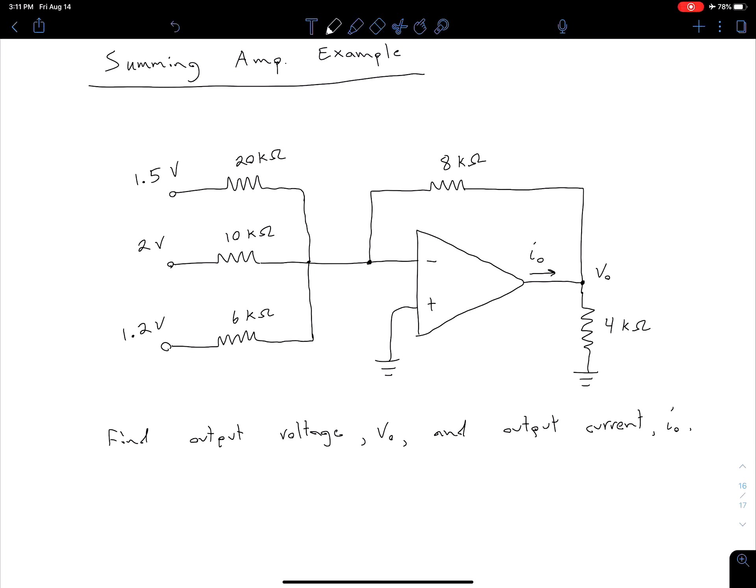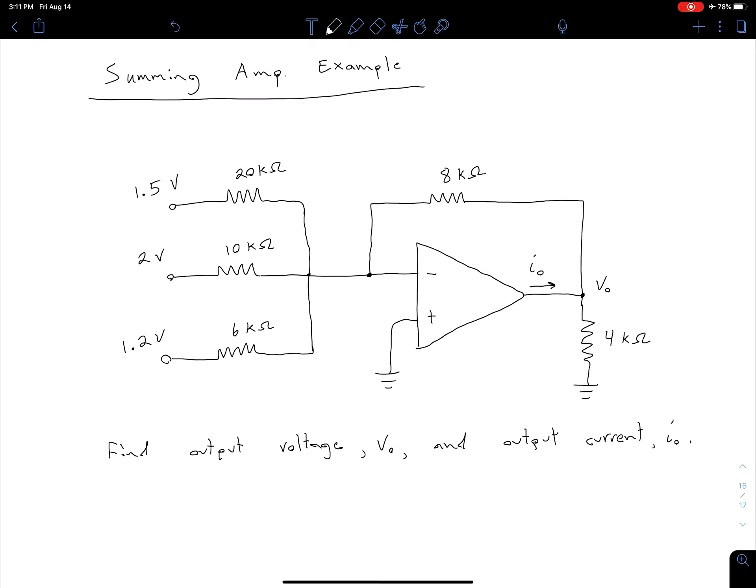If we want to use our general equations that we got last time, which typically we will because that's going to be easier than starting from our ideal op amp properties and re-deriving every time, there's nothing technically wrong with doing that, it's just going to take more time.